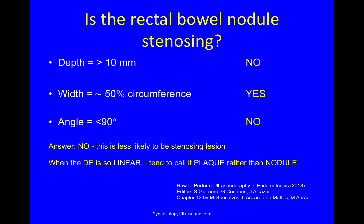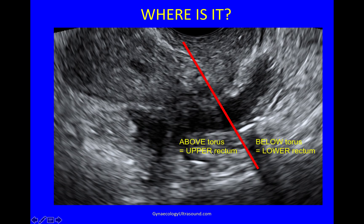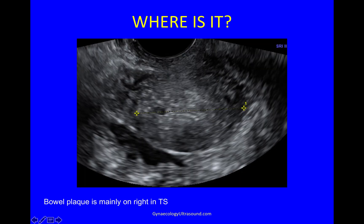This is a book I can highly recommend — that's where I got these surrogate markers for bowel stenosis from. So we know what it is. Where is it? Looking again at the uterus, how will I describe where this bowel lesion is? Drawing the torus, you can see that the abnormal plaque extends on both sides of the torus. The bowel above this line is called the upper rectum and below it the lower rectum. In the transverse plane — it's such a useful plane to look at the relationship between different tissues — you can see it's mainly on the right.